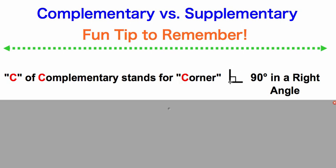When we think about a corner, like a corner of an angle, we can see that a corner makes 90 degrees. So all complementary angles are going to form corners or 90 degree right angles.